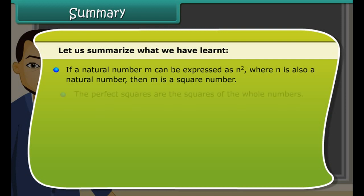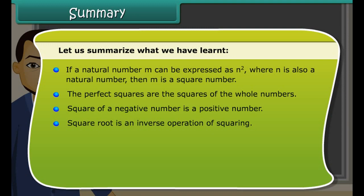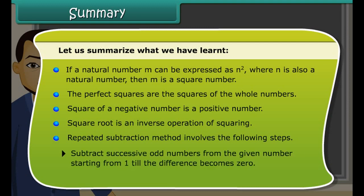Let us summarize what we have learned. If a natural number M can be expressed as N square, where N is also a natural number, then M is a square number. The perfect squares are the squares of the whole numbers. Square of a negative number is a positive number.